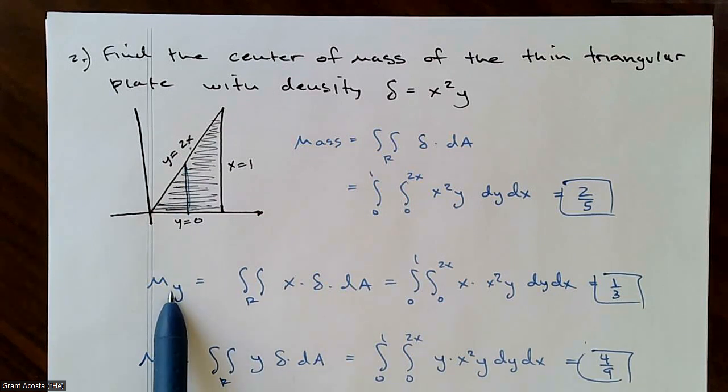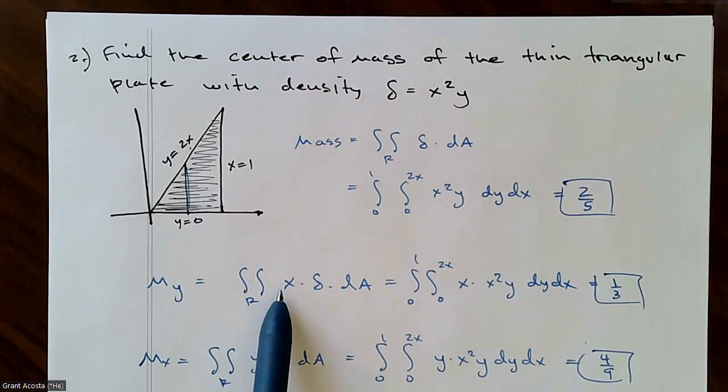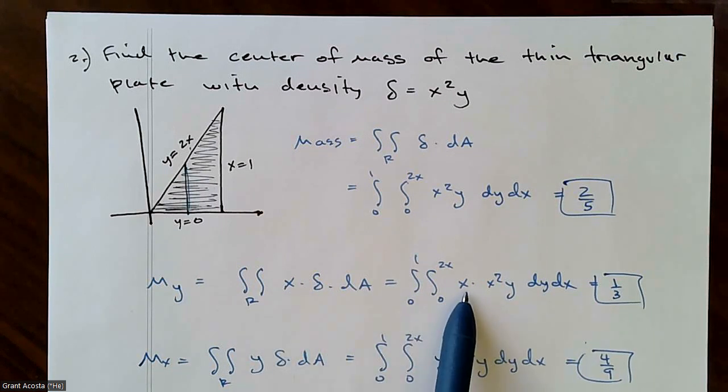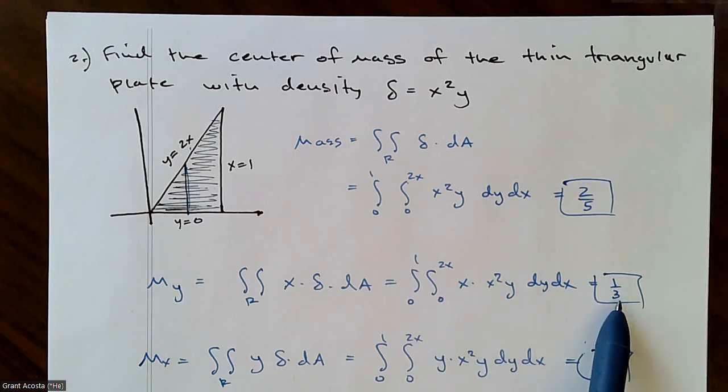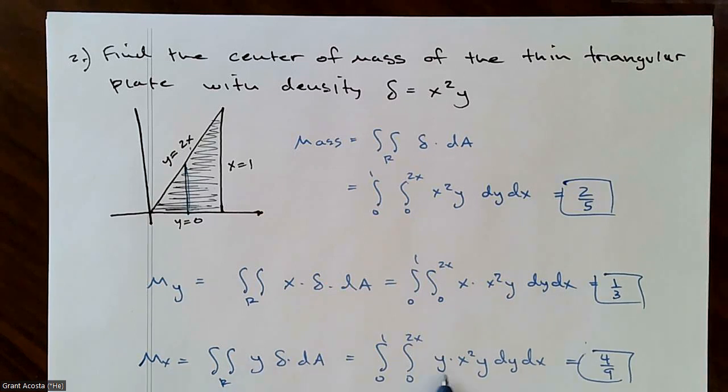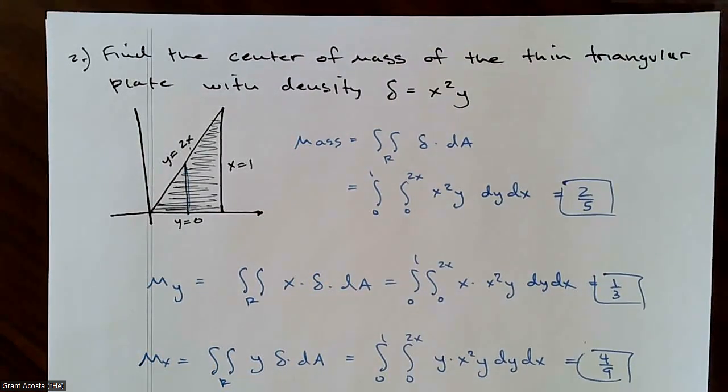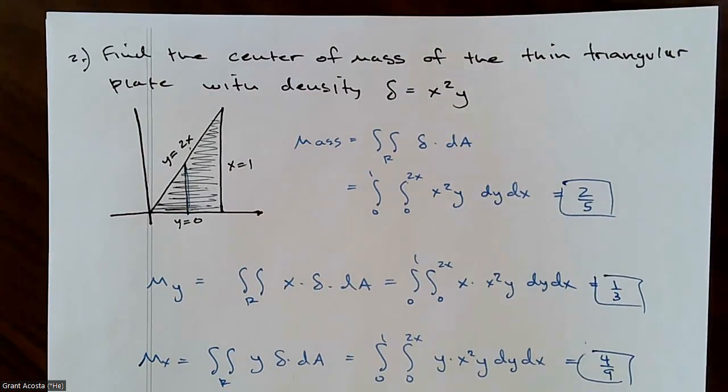A moment about the y-axis. This is a two-dimensional plate, so just a double integral. Multiply x times the mass. That's the distance to the y-axis. So I have an extra x times x squared y. That's my density. Work that out. Hopefully you can show that you get one-third. Same thing for a moment about the x-axis. Now you're going to multiply y times your mass. I ended up getting four-ninths. You should probably pause the video and make sure you get those calculations, get those numbers.